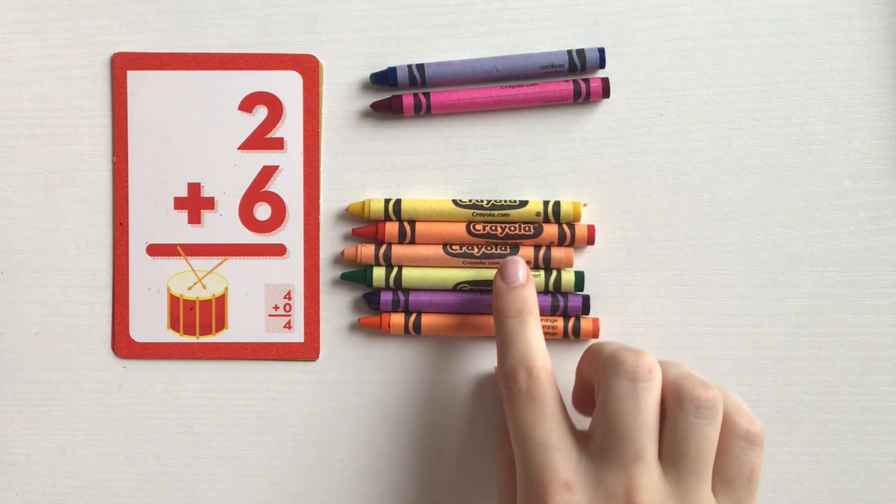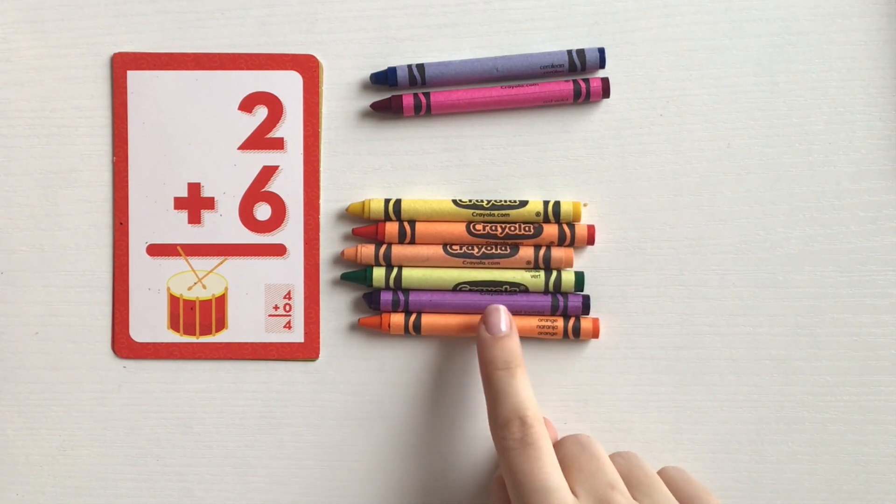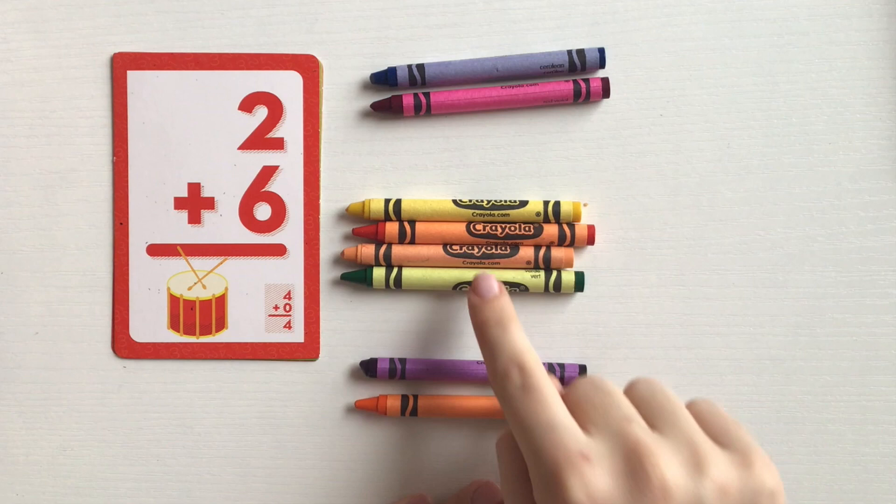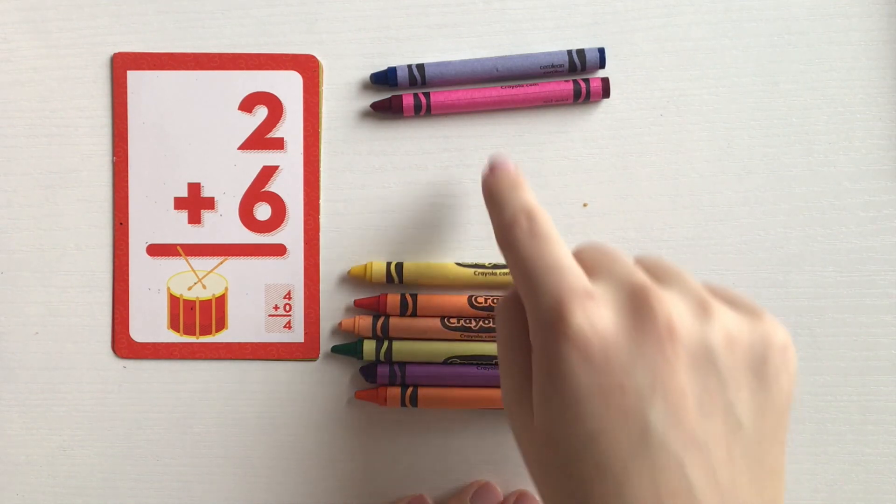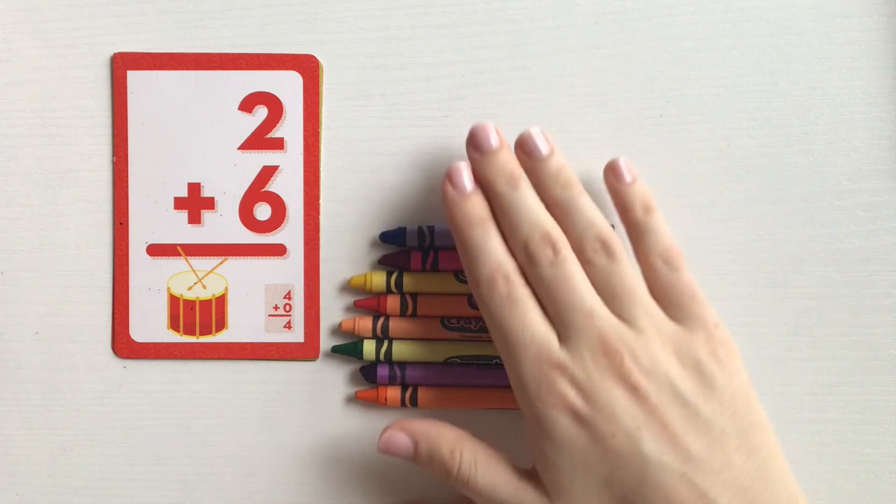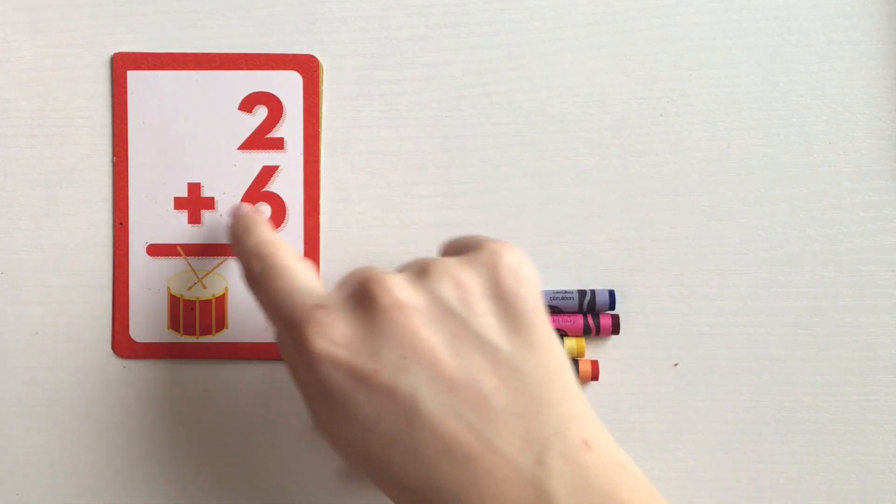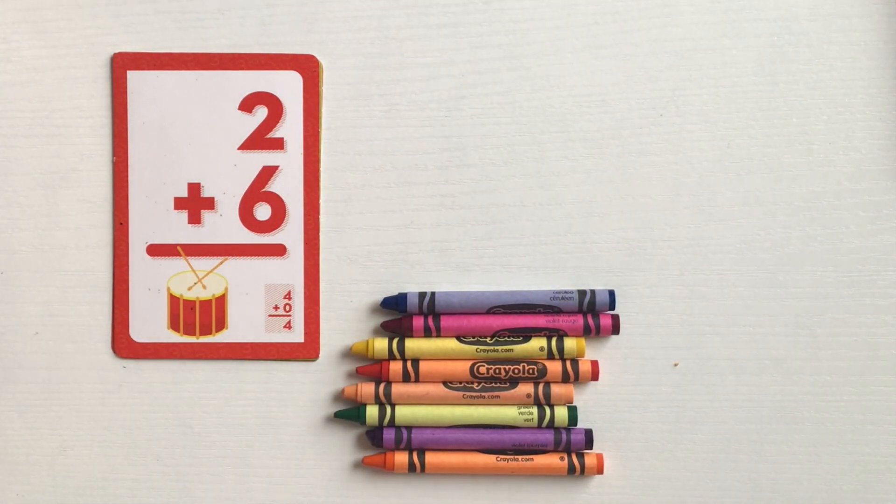Now I'll add them all together. One, two, three, four, five, six, seven, eight. Two plus six equals eight.